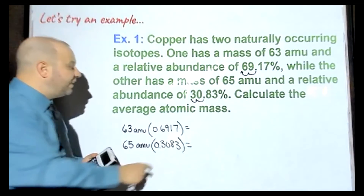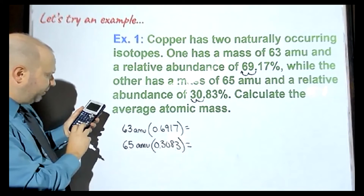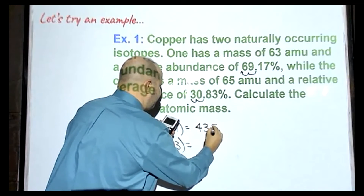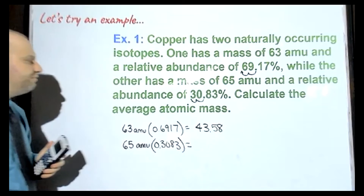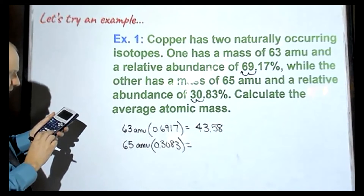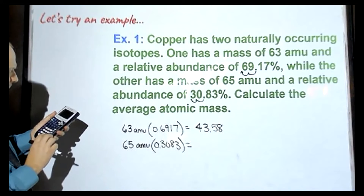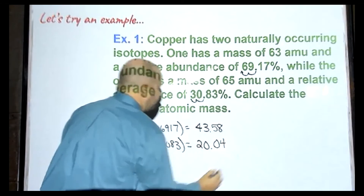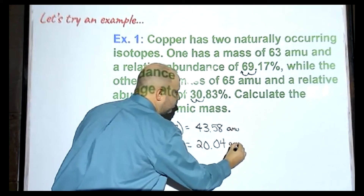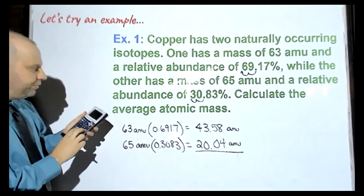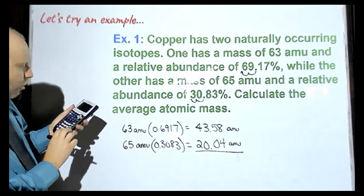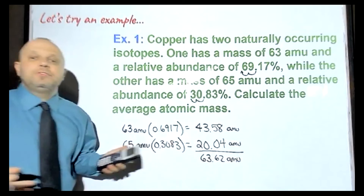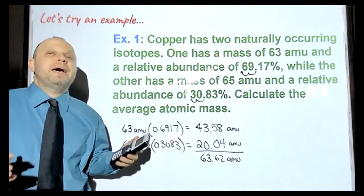We take each of those values and find what they're equal to. 63 times 0.6917 is 43.58, and 65 times 0.3083 is 20.04, both in AMU. Then we add those two pieces together: 43.58 plus 20.04 gives us 63.62 AMU. This will be very close to the number you see when you look up copper's mass on a periodic table.